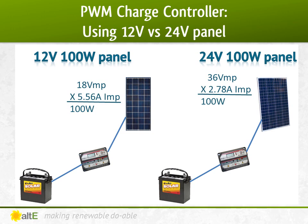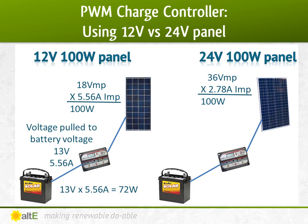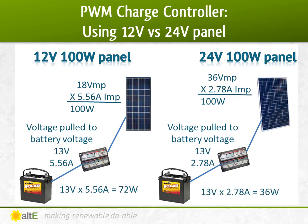A 24-volt nominal 100-watt panel has twice the voltage but half the current — 36 volts times 2.78 amps equals 100 watts. As we saw previously, a PWM charge controller brings the panel voltage down to the battery voltage. So for the 12-volt panel, the volts get pulled down from 18 volts to 13 volts — 13 volts times 5.56 amps equals 72 watts. For the 24-volt panel, it does the same thing: it pulls the voltage from 36 volts down to 13 volts. But remember the current was half — so with 2.78 amps times 13 volts, that equals only 36 watts. You've lost most of the power from that 24-volt panel by throwing away those extra volts.